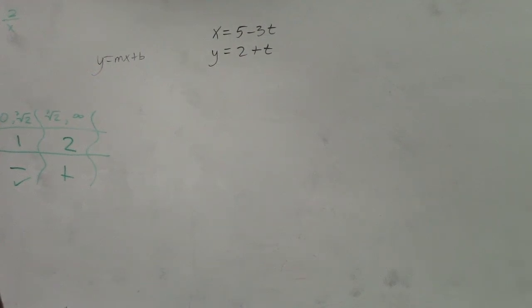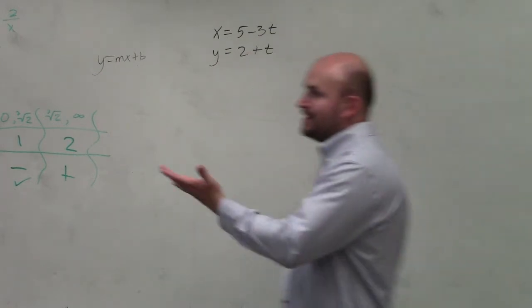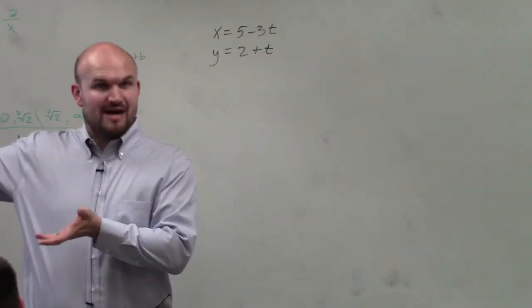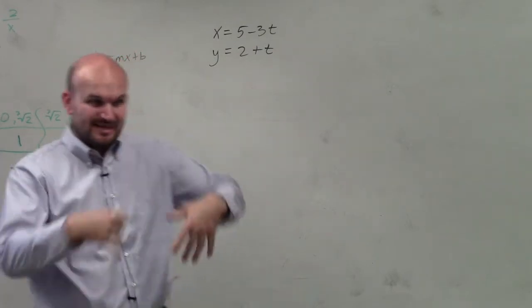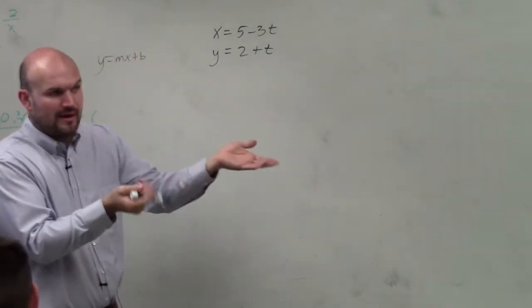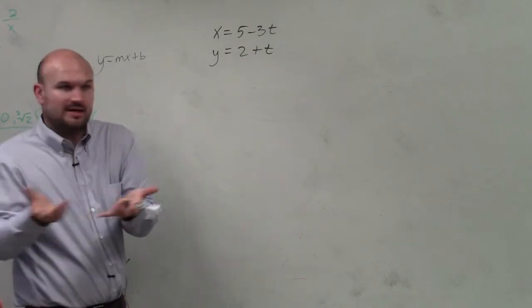All right, so what we need to do to eliminate the parameter is we're going to write an algebraic equation so we can graph it in function form without the t's. We need to eliminate the t, which is the parameter, or our third variable, as we discussed.